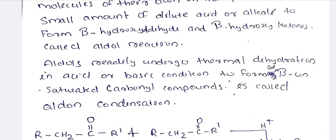Aldehydes or ketones having at least one alpha hydrogen react between two of themselves to form beta hydroxy aldehyde or beta hydroxy ketones — that is the aldol reaction product. This is followed by thermal dehydration to give alpha, beta unsaturated carbonyl compound, giving us aldol condensation.